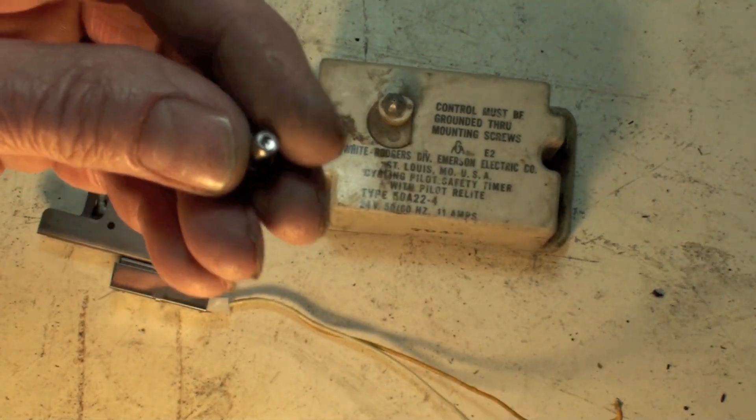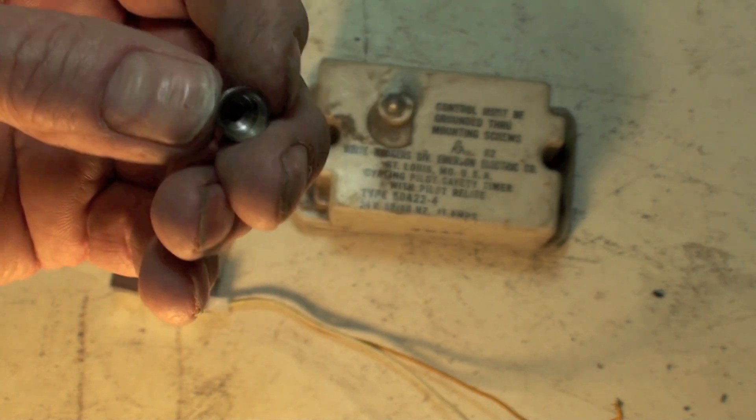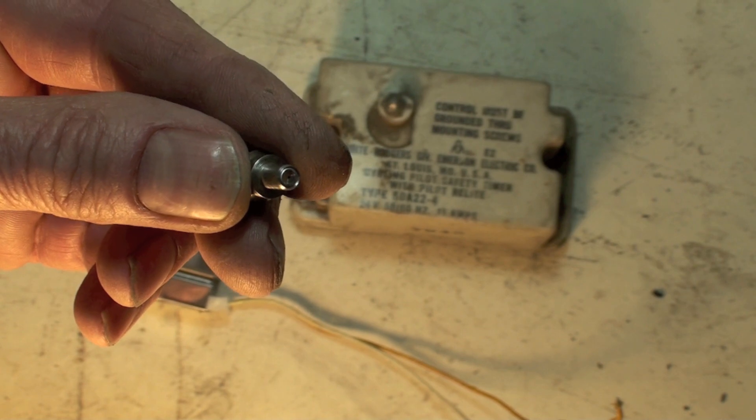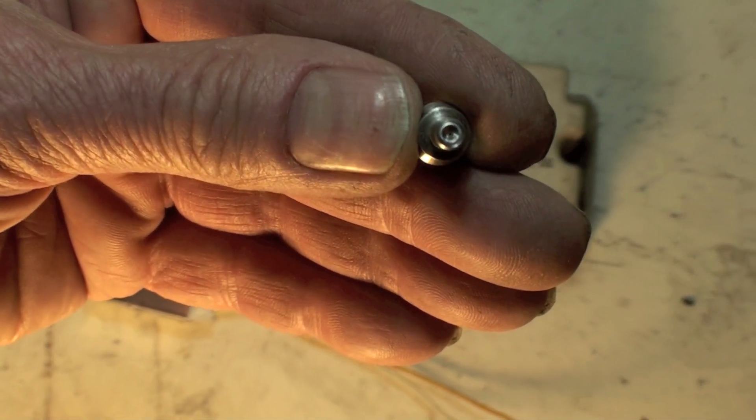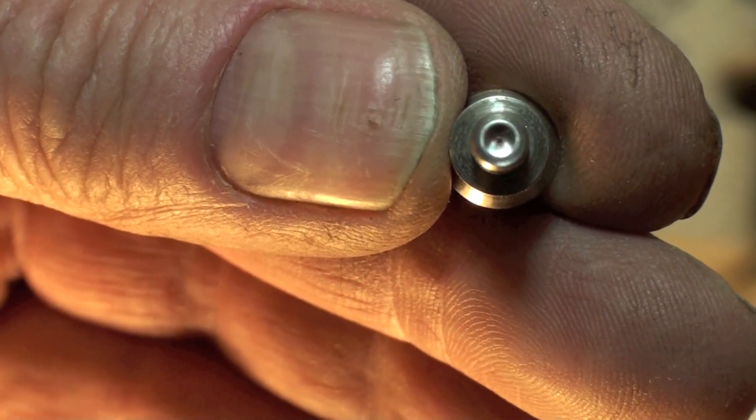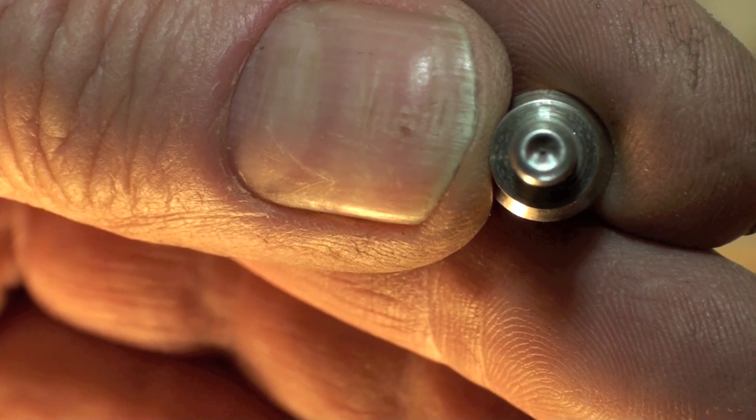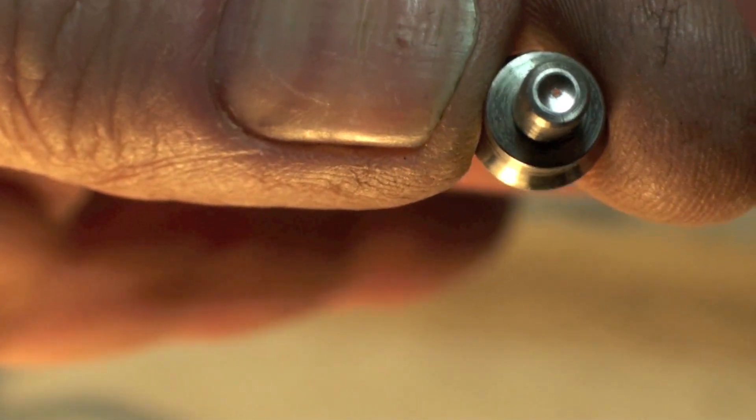Now this is an orifice. Very, very small, very tiny. These things get replaced whenever these pilots get replaced. These things you just pretty much can't clean them. I'm not sure how you manage to clean something like that. It is so tiny a number 80 drill bit won't even do it. You can see through them if you look very close.